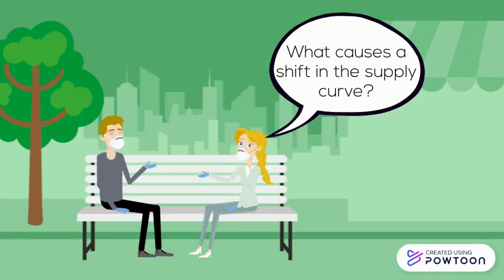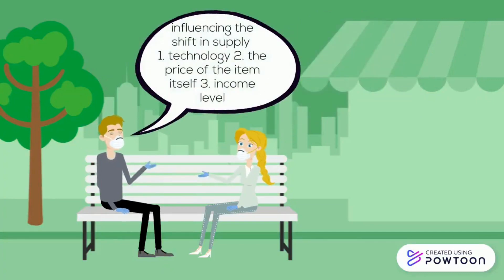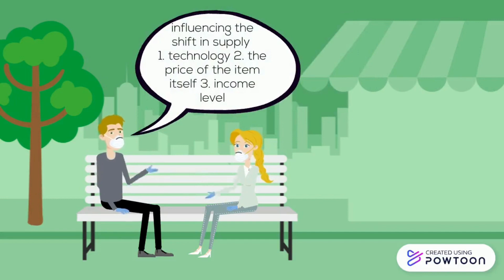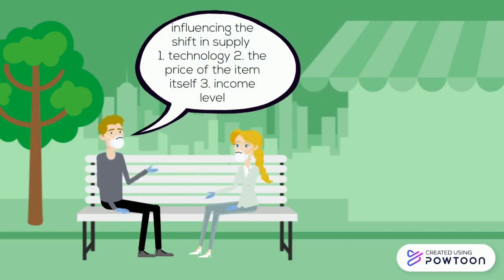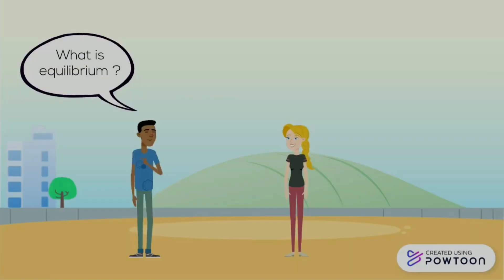What causes a shift in the supply curve? The factors influencing a shift in supply are: one, technology. Two, the price of the item itself. And three, income level.